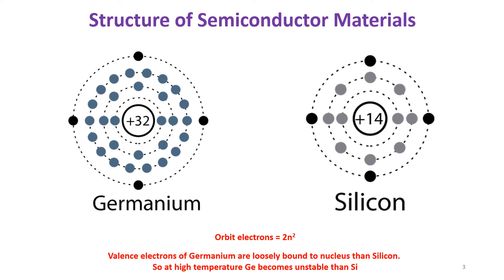The protons are positively charged and electrons are negatively charged particles, so there will be a force of attraction between them. The force of attraction will be more for the first orbit electron compared to the second orbit electron.